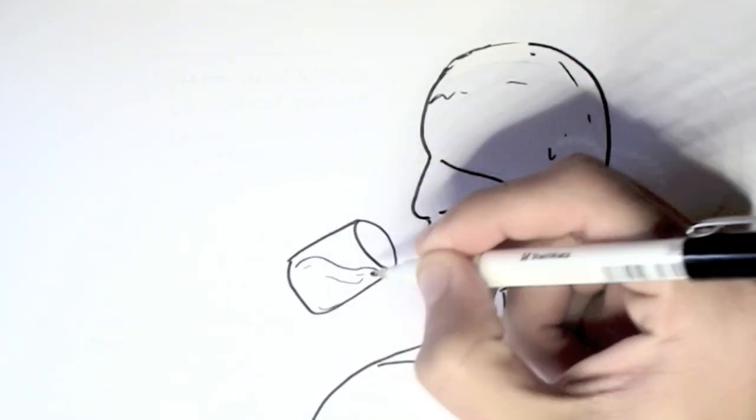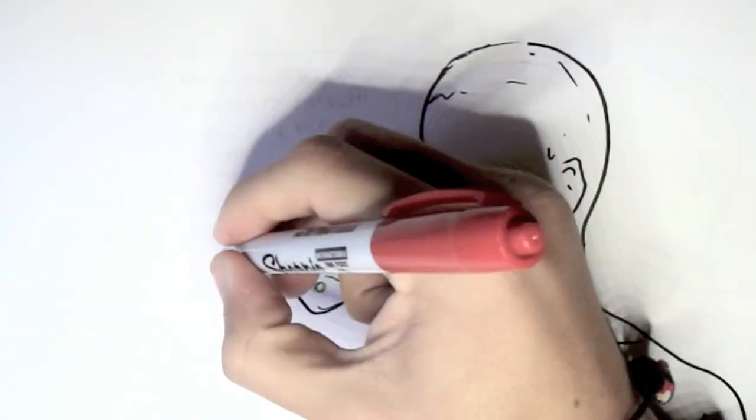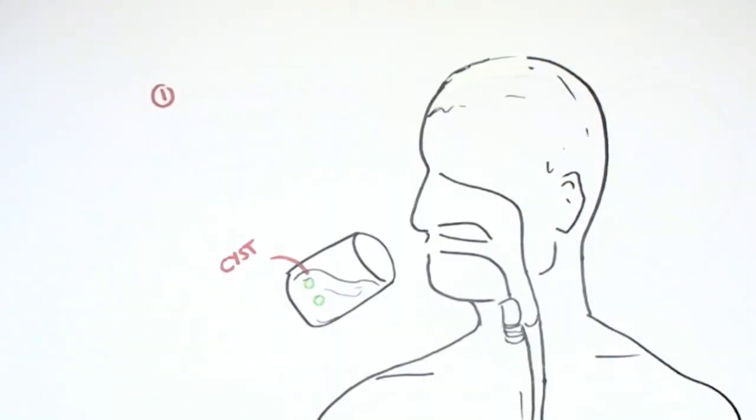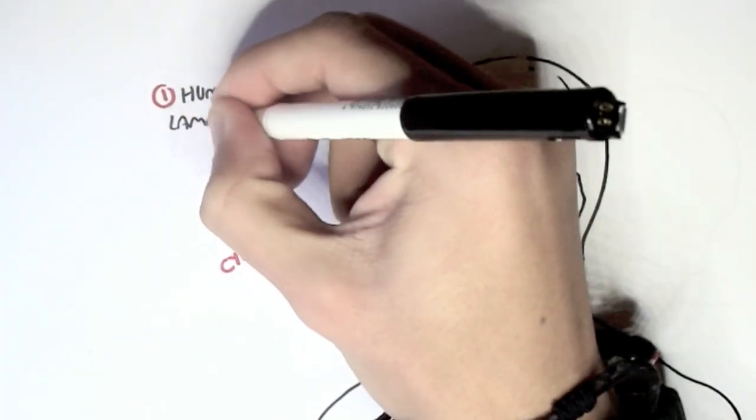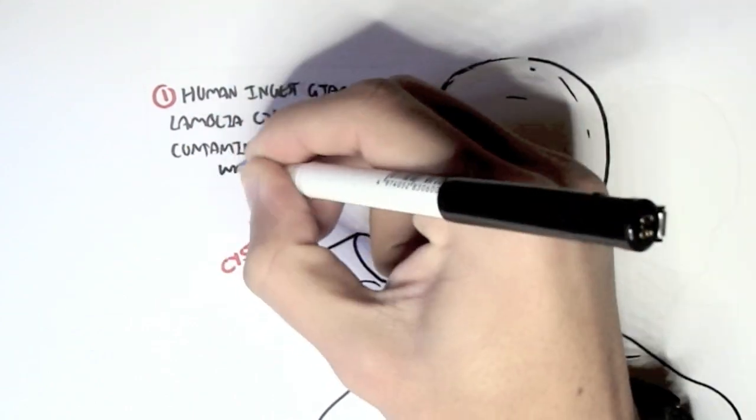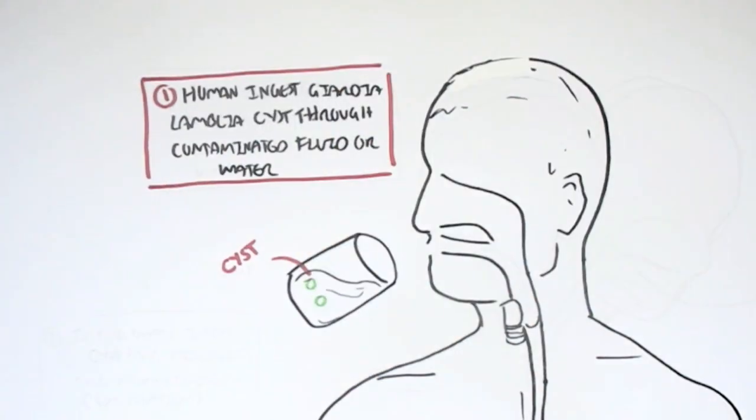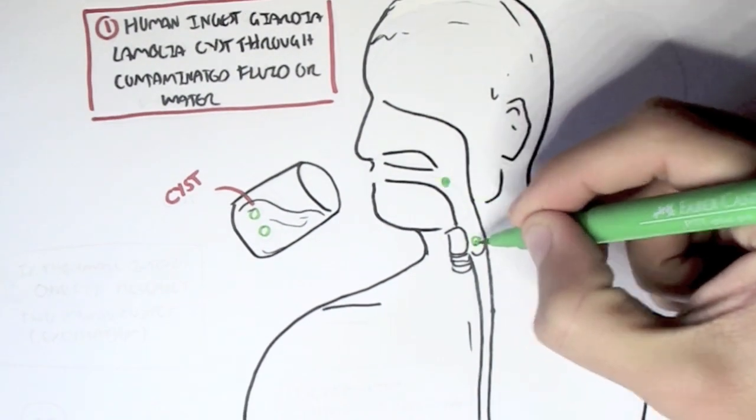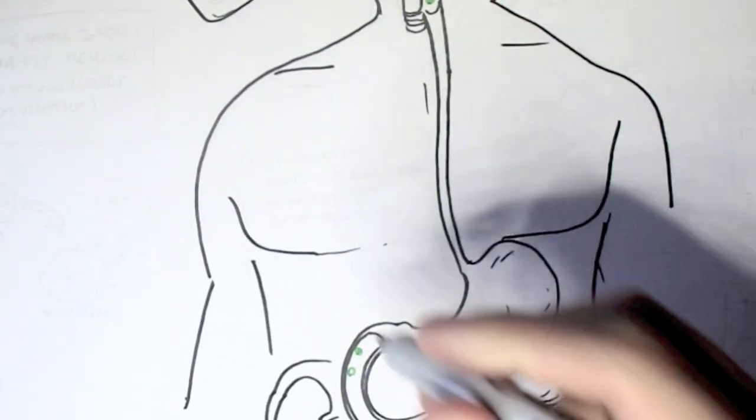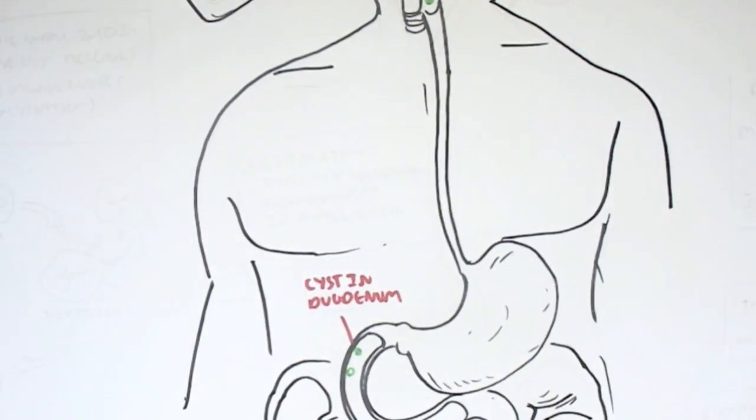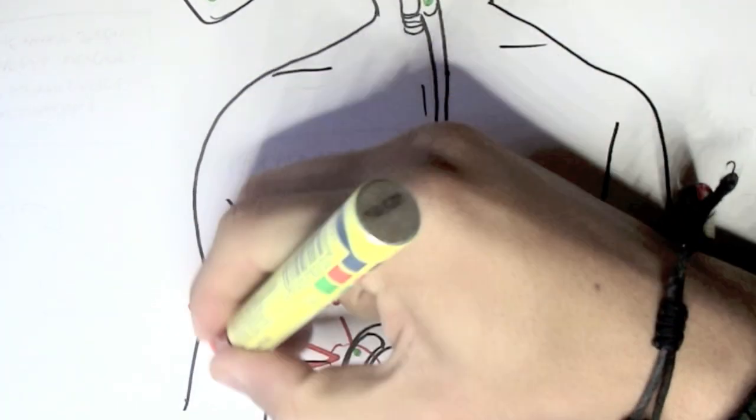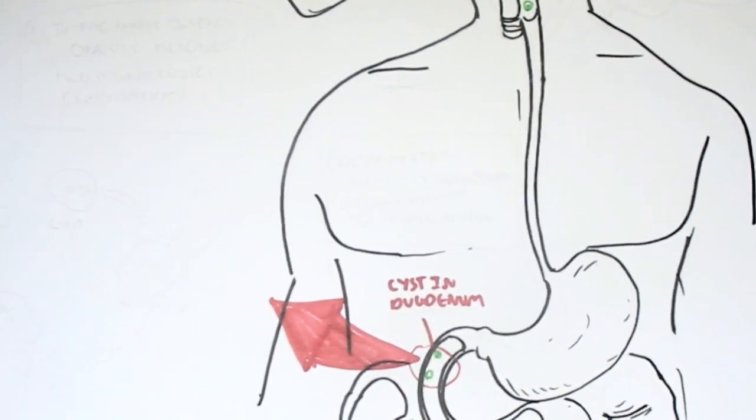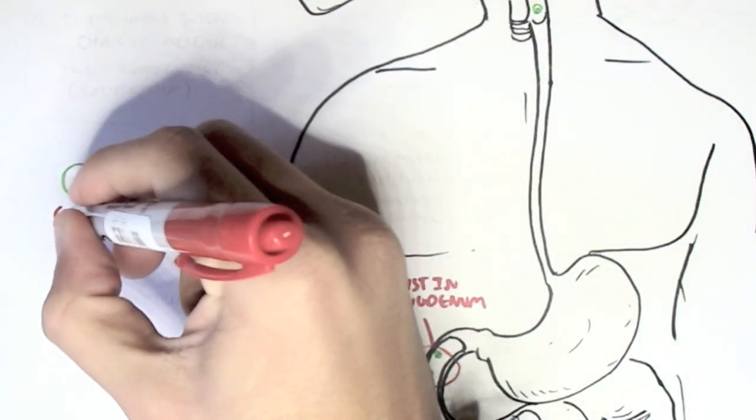The infection can begin when a human ingests Giardia lamblia cysts through contaminated fluid or water. So here we have water that would be contaminated with Giardia cysts. The cysts will travel down through the esophagus, through the stomach, and essentially bind to the mucous layer of the small intestine, the duodenum here.